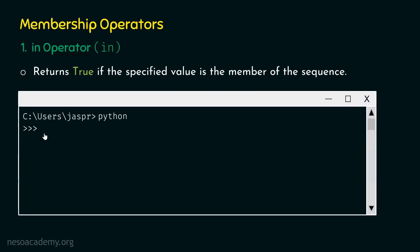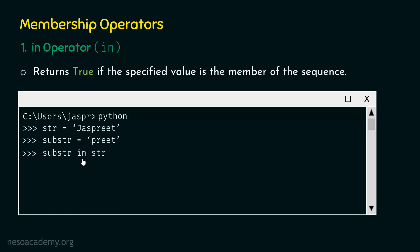Let's open the command prompt and activate the Python interactive shell. Type the command: str = 'justpreet'. Justpreet is written within single quotes, so this is a string. Now hit enter and type: substr = 'preet'. So substr is 'preet' and str is 'justpreet'. Now type: substr in str. The In Operator is applied on substr and str, checking whether substr is part of str — that is, whether substr is a member of str.